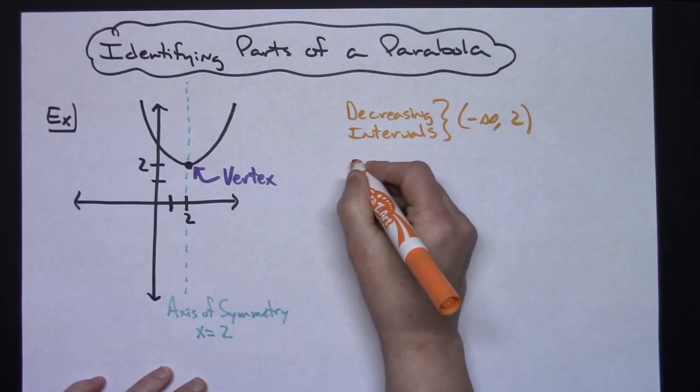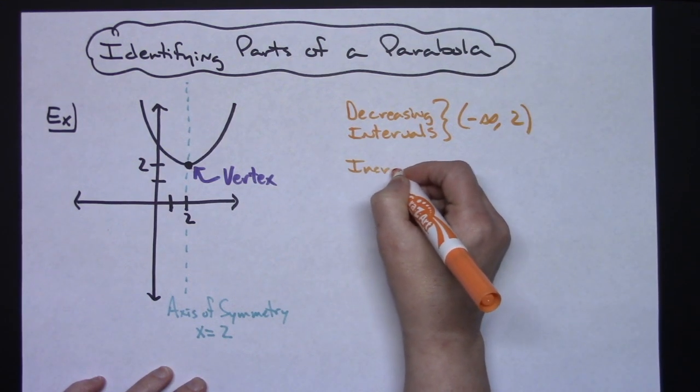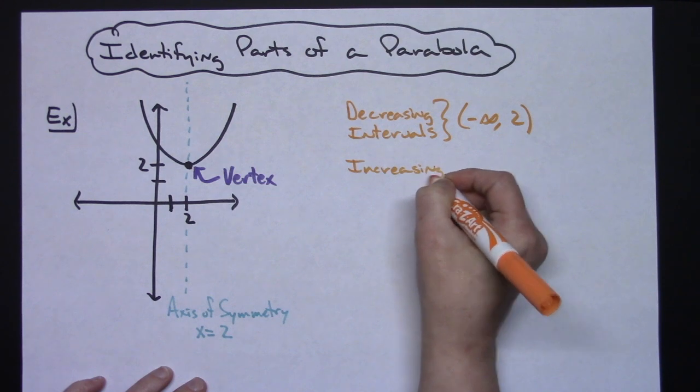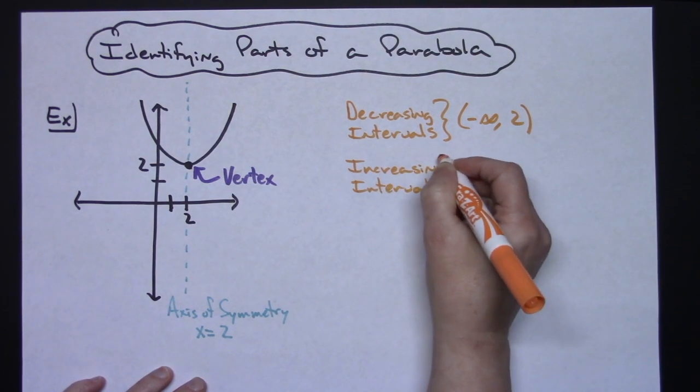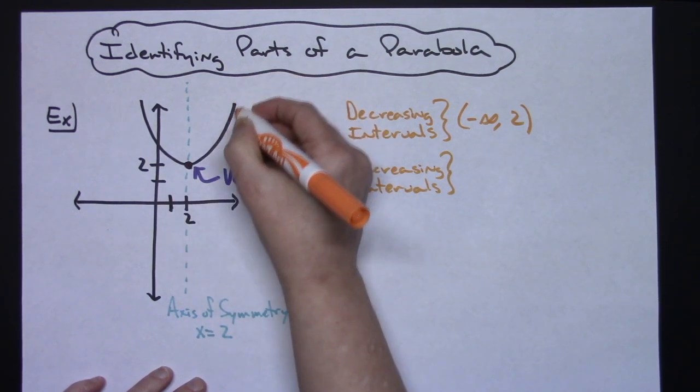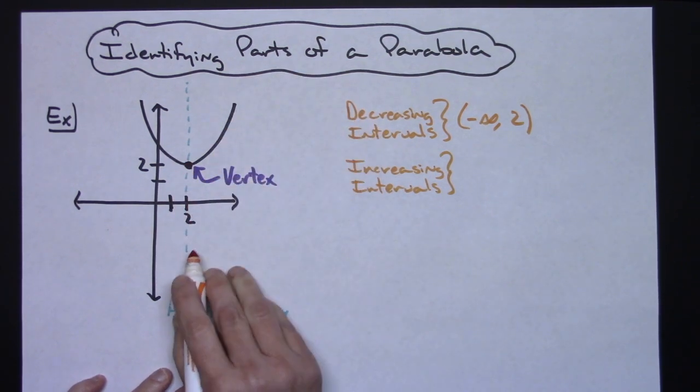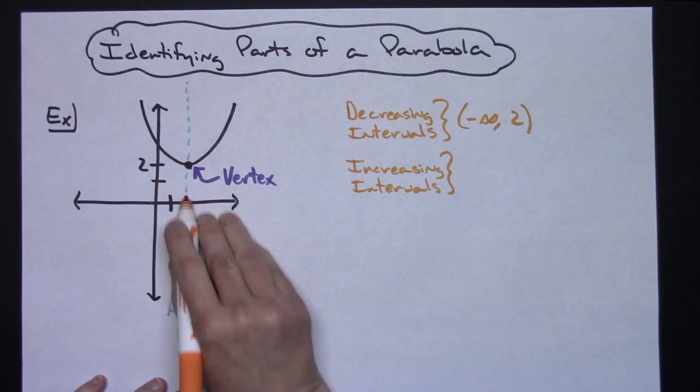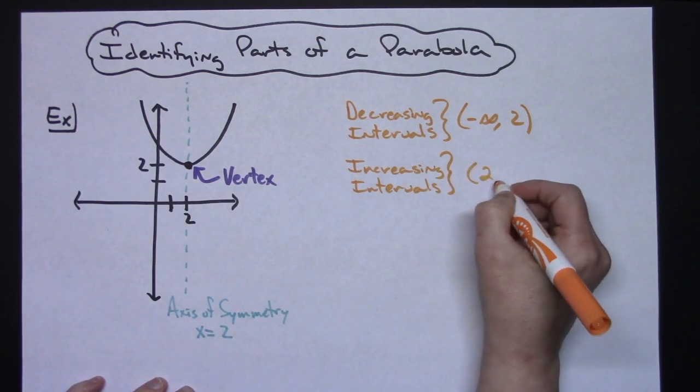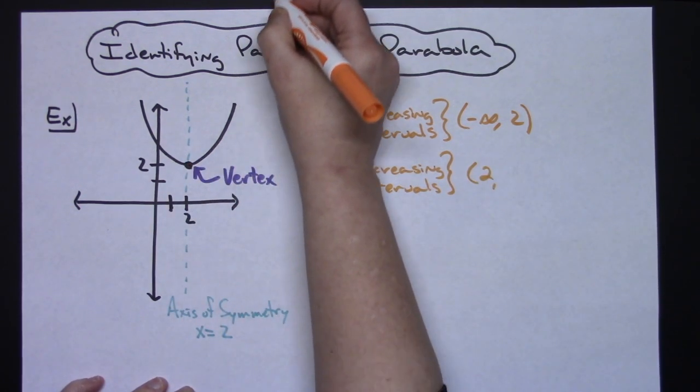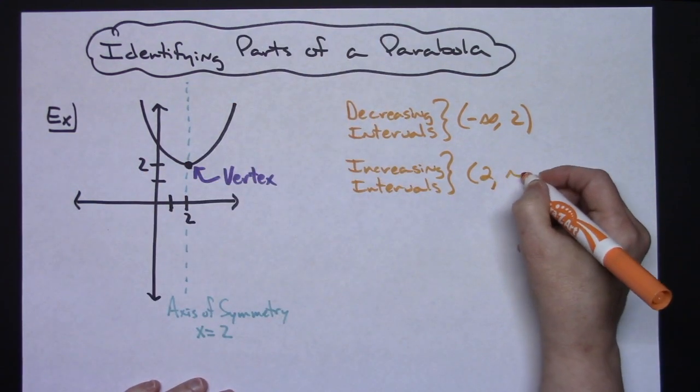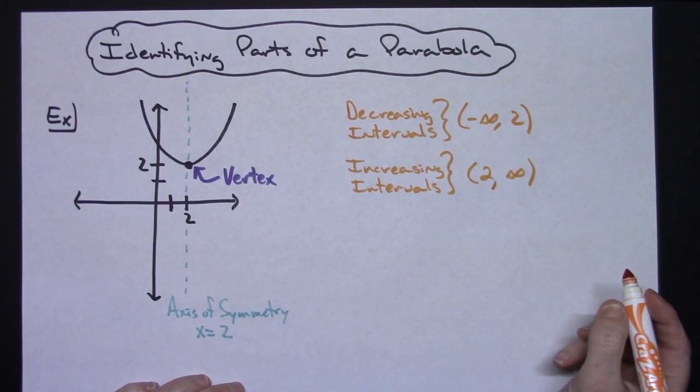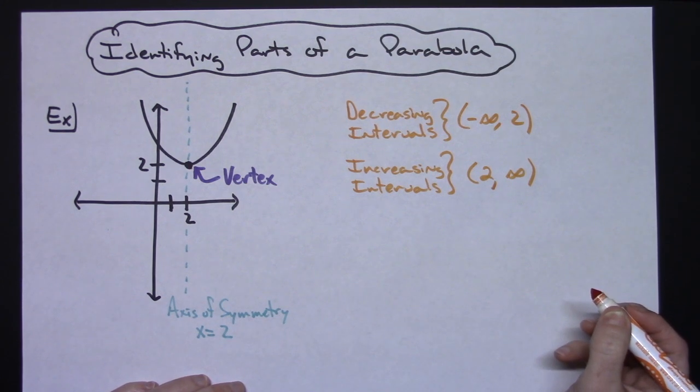And then increasing intervals—well, increasing would be on this portion of the parabola. What x value does it start at? It starts at 2, and then it increases forever and ever to the right, which means our x value is going to positive infinity. So there is your decreasing and increasing intervals for the parabola.